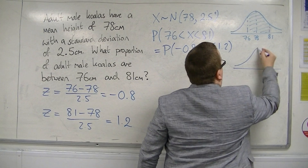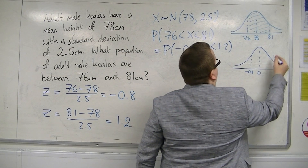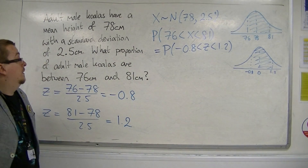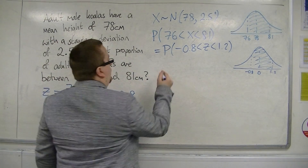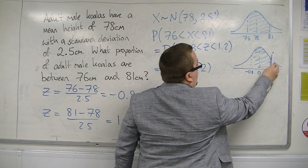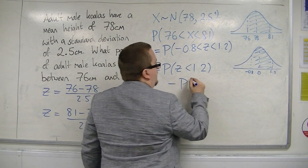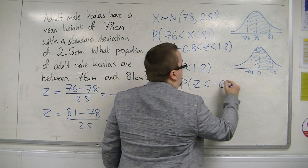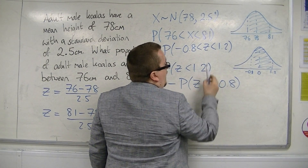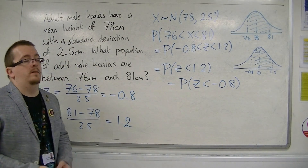On our standardised normal curve, there's 0, there's minus 0.8 and there's 1.2. In order to do this, we're going to find the probability of z being less than 1.2 — because that gives everything to the left of 1.2 — and subtract the probability of z being less than minus 0.8. So if we have everything to the left of 1.2 and take away that section, we're left with the shaded area. I'm going to now show you how to do that on the calculator.